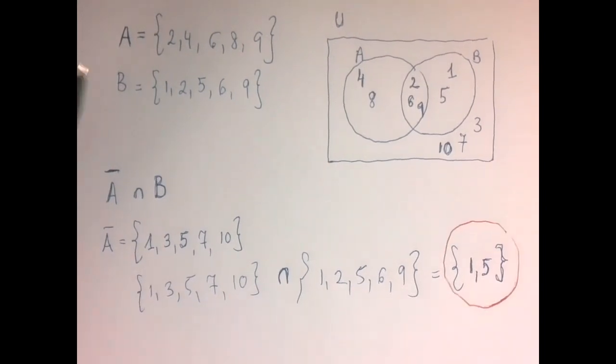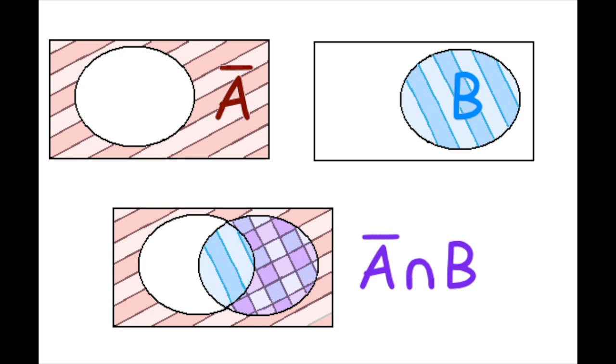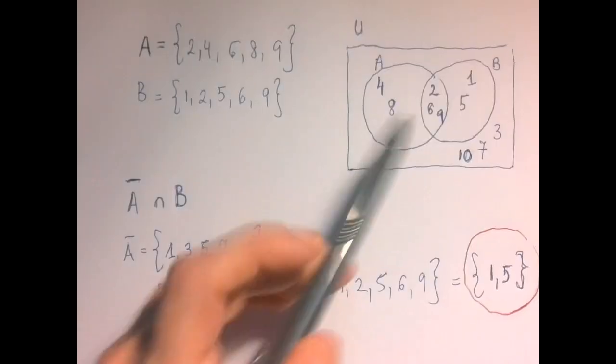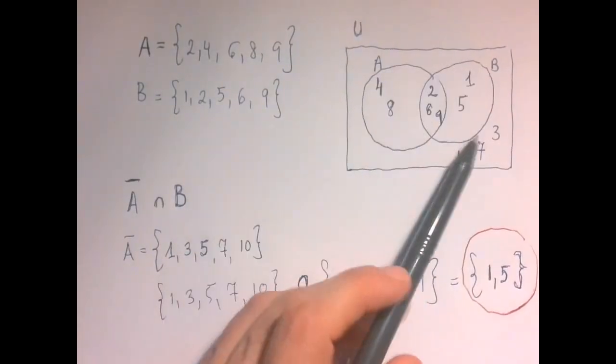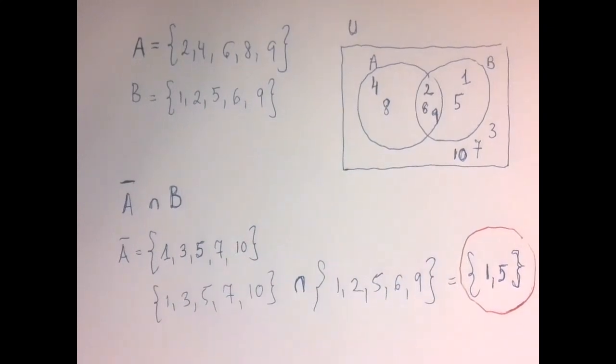So visually, what would this mean? Complement of A intersected with B. So that is the elements that are outside of A and inside of B. Outside of A, but inside of B, there is our 1 and 5.